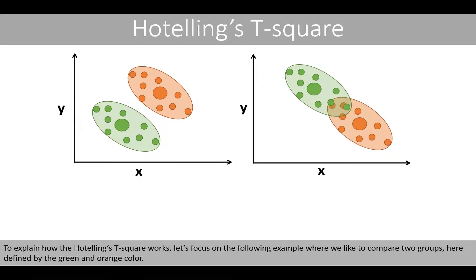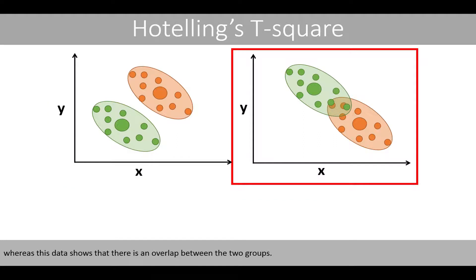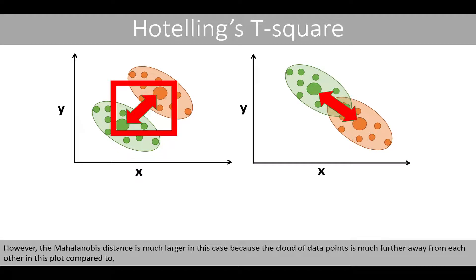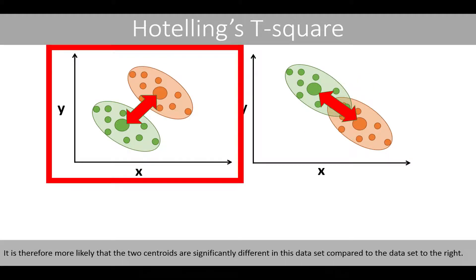To explain how the Hotelling's t-square works, let's focus on an example where we compare two groups, defined here by green and orange color. We see that the two groups show a clear separation when plotted based on the two variables x and y, whereas this other dataset shows an overlap between the two groups. The Euclidean distance between the two centroids is the same in these two example datasets. However, the Mahalanobis distance is much larger in the first case because the cloud of data points is much further apart compared to the overlapping dataset. It is therefore more likely that the two centroids are significantly different in the first dataset.